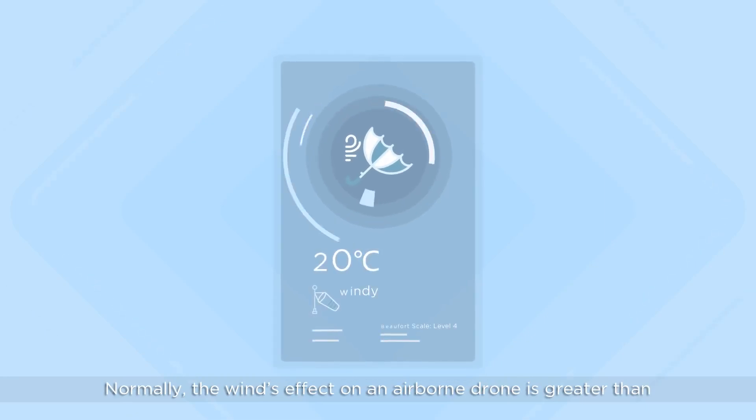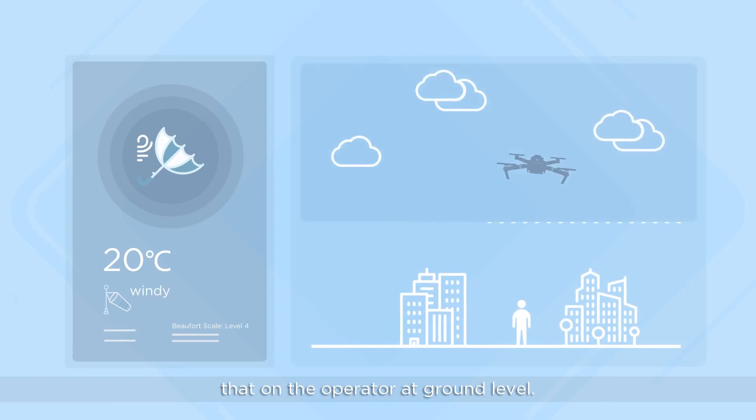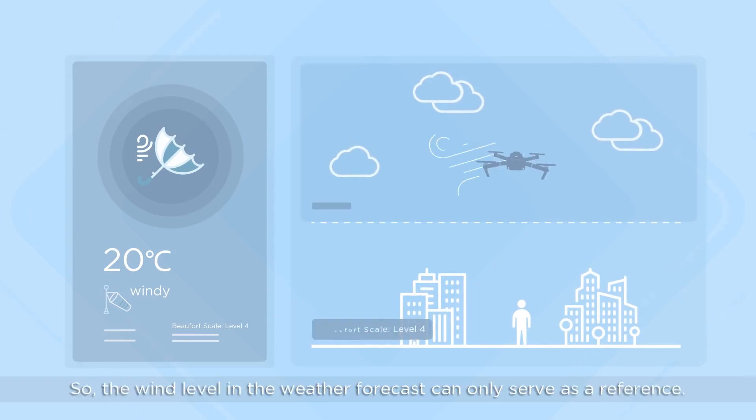Normally, the wind's effect on an airborne drone is greater than that on the operator at ground level. So, the wind level in the weather forecast can only serve as a reference.